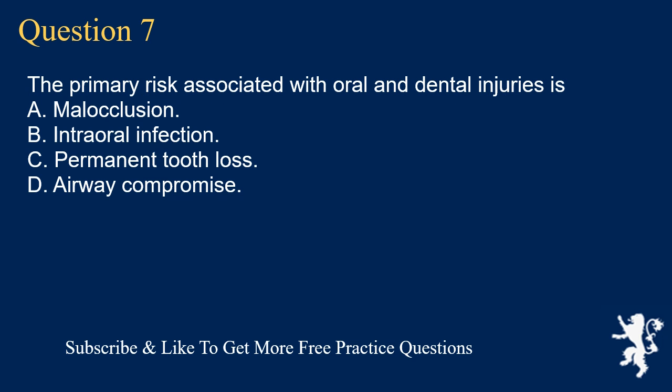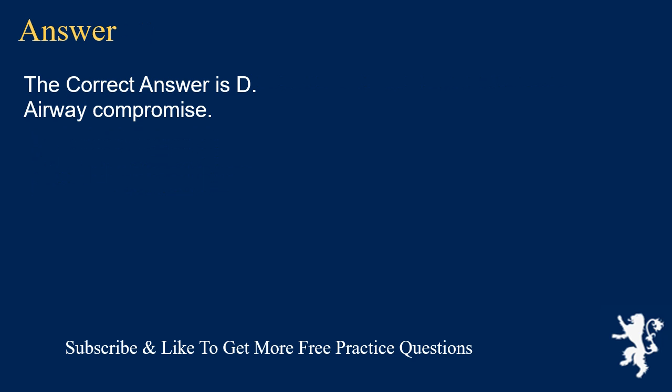Question 7. The primary risk associated with oral and dental injuries is: A. Malocclusion. B. Intraoral infection. C. Permanent tooth loss. D. Airway compromise. The correct answer is D. Airway compromise.